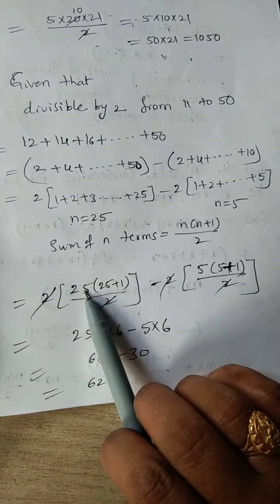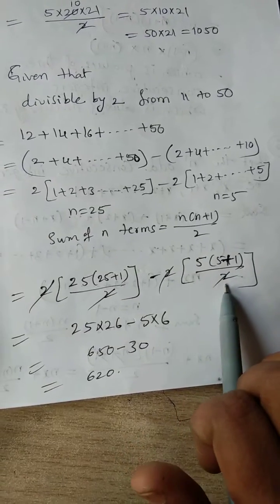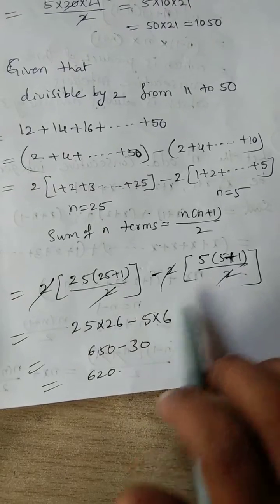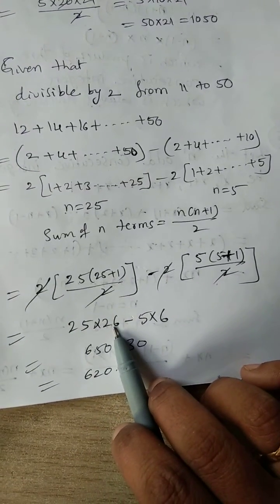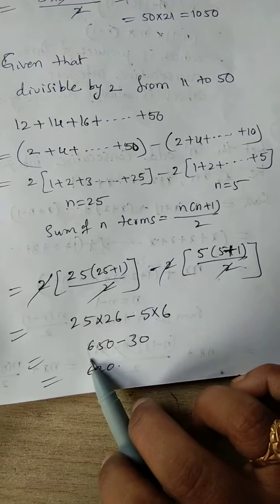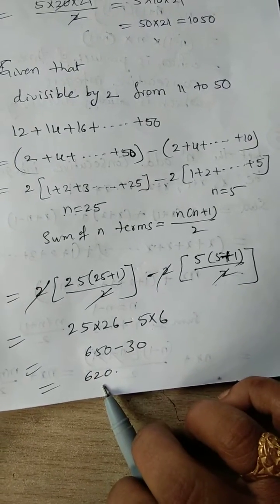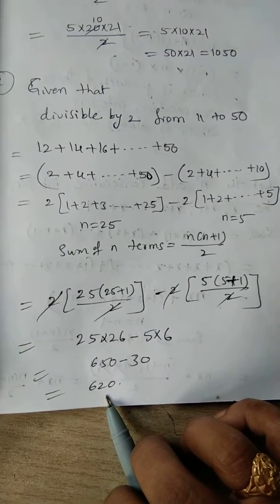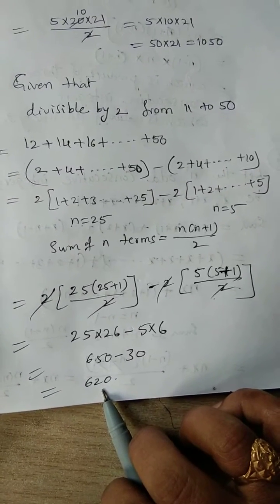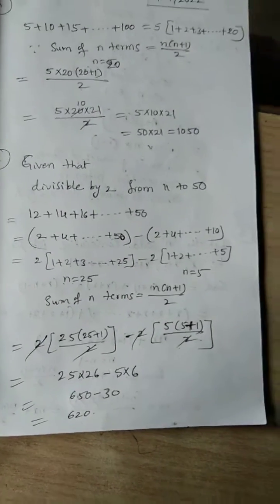Substituting: 2 × 25×26/2 − 2 × 5×6/2. The 2s cancel: 25×26 − 5×6 = 650 − 30 = 620. So the sum of integers which are divisible by 2 from 11 to 50 is 620.